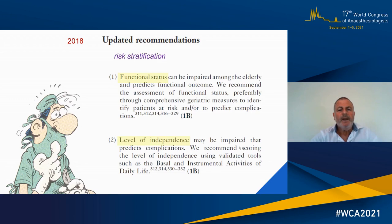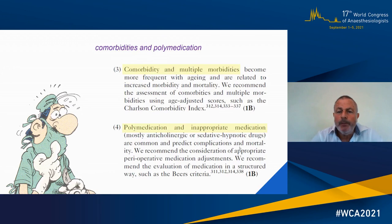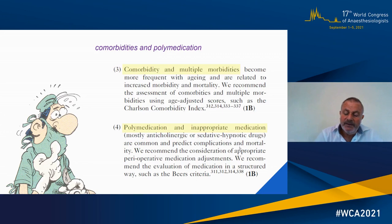What are these updated recommendations dealing with? First of all, they look at risk stratification. It's very important to assess the functional status of the patient and the level of independency, using specific validated measurement systems. Secondly, it's important to have an idea about comorbidities and polymedication. Most of these patients not only have additional morbidities, but they also take a lot of medication — sometimes even inappropriate medication — which might interfere with anesthesia.